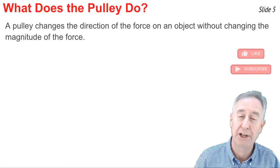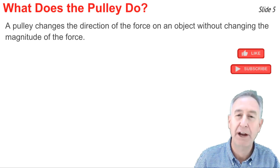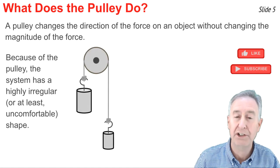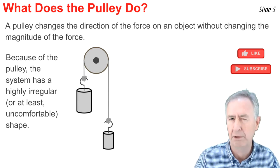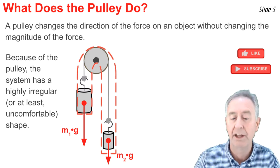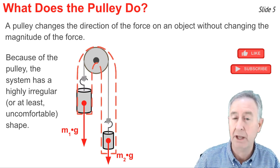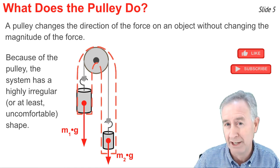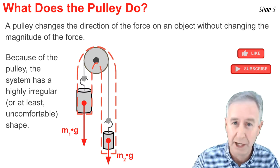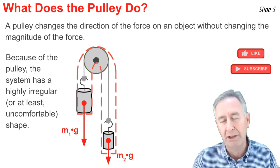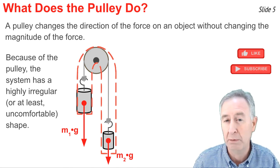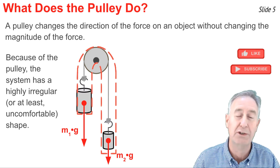It's important to understand what a pulley does. The pulley changes the direction of a force without actually changing the magnitude of the force. Because of the pulley, our system is a very irregularly shaped and uncomfortable shaped system. Here's a picture of our system with the two forces that act upon it. There's the force of gravity on the left side of the system, and there's the force of gravity on the right side of the system. When you look at these two forces, you might think that this whole system would accelerate downwards since the only forces are downwards. But don't forget, there's a pulley in between those two forces. And so the force on the right side is actually an opposing force since the pulley changes the direction of that force.